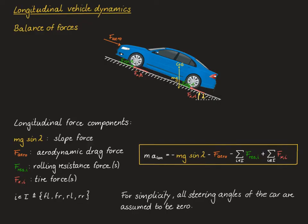The second relevant force component is the aerodynamic drag force, which obviously depends on the current speed of the vehicle. The third relevant longitudinal force component is the rolling resistance forces which act on the individual tires, so there's a total of four rolling resistance forces where the index i runs over all four tires: the front left, front right, rear left, and rear right tire. The fourth relevant force component in the longitudinal direction is the tire forces, due to contact between the tire and the road, which propel or brake the vehicle.